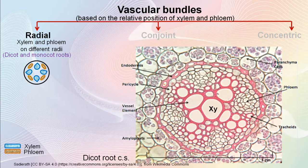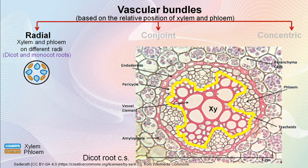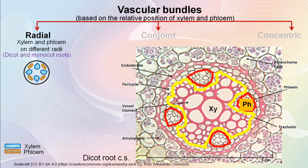Now if you check the cross section of this dicot root, the pith is absent and the xylem is in the shape of the letter X. And here are the phloem groups alternating the xylem groups. In the radial vascular bundle, as the xylem and phloem are seen separately, they cannot be truly called bundles.